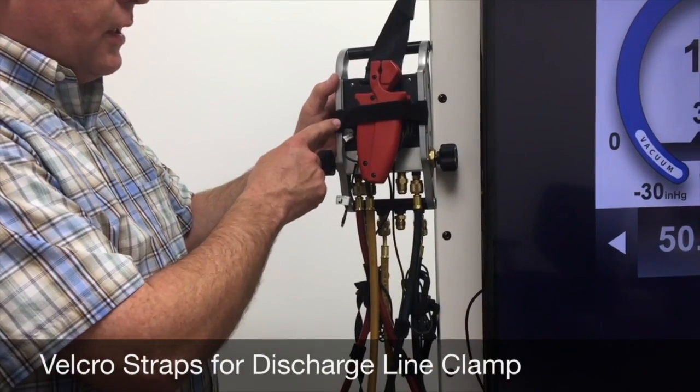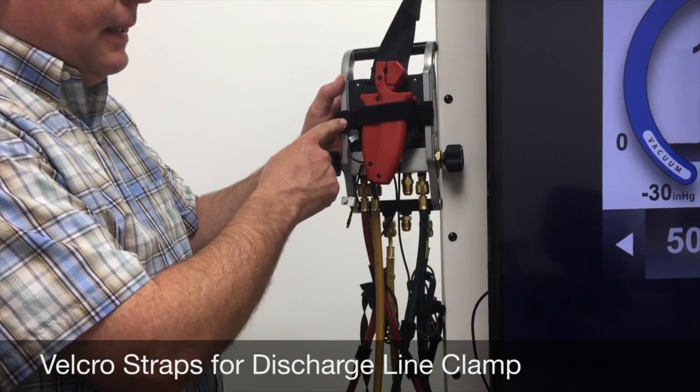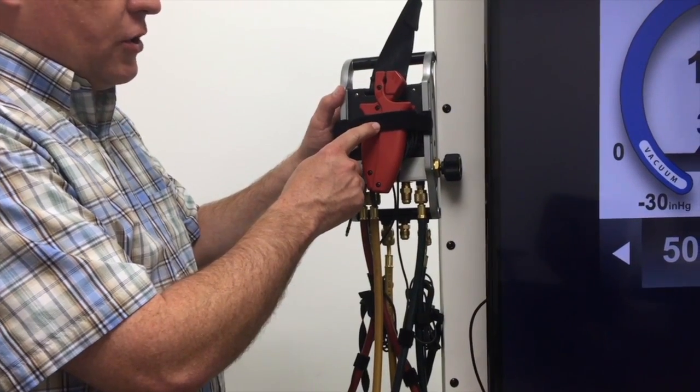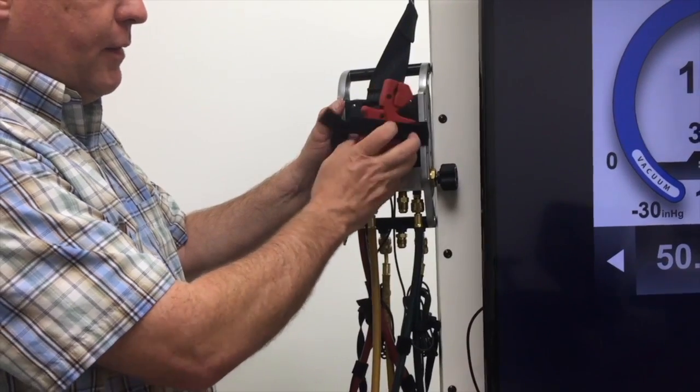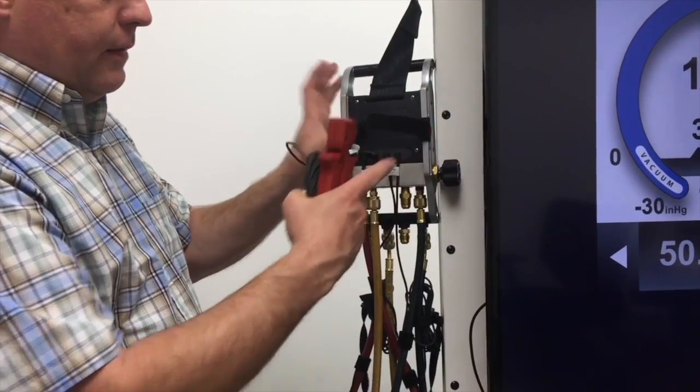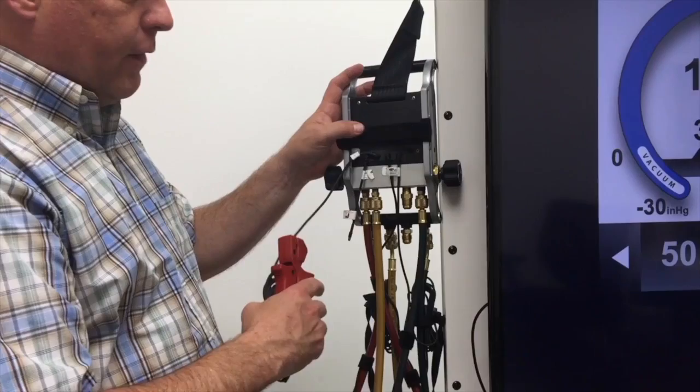The next thing you'll notice is I use a couple of Velcro straps on the back because I use a discharge line temperature sensor, and I keep it stored back there. When I'm ready to use it, I just take it off and flip these back over and I'm ready to go.